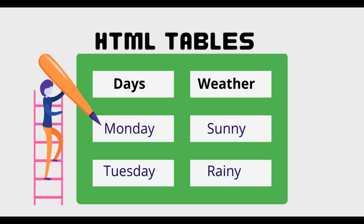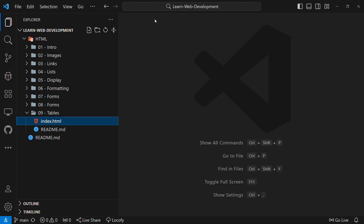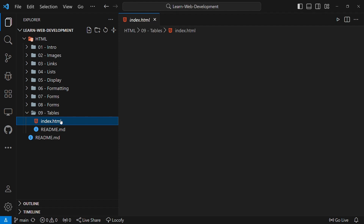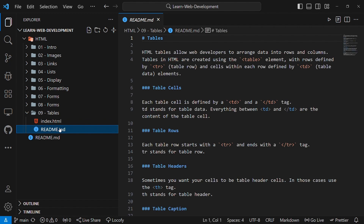If you have been following the course, you are aware of the repository we forked, which contains essential resources. To access today's notes, just log into your GitHub account and go to the repository that you forked. If you are behind, click on the sync fork button, then click on update branch and your branch will be up to date. Then you can open Visual Studio Code, navigate to the cloned repository, open the terminal and use the git pull command to pull the changes to your local machine. This ensures that you have the latest notes. Once you have pulled the latest notes, you will see a folder called 09 tables, and that folder contains two files: the index.html, where I will write our HTML code, and the readme.md, which contains today's notes.